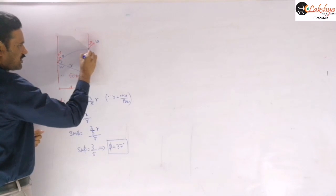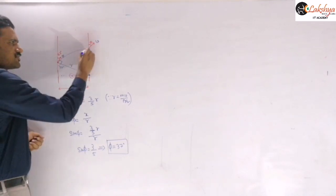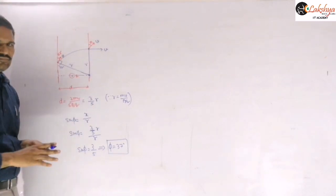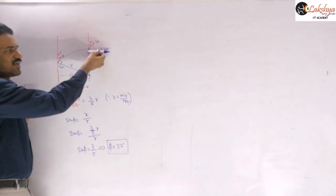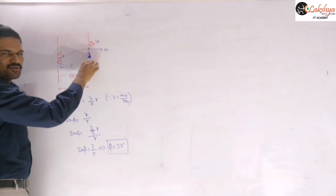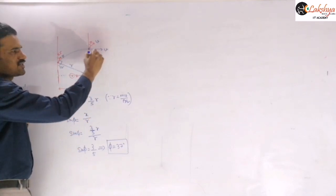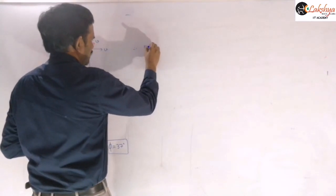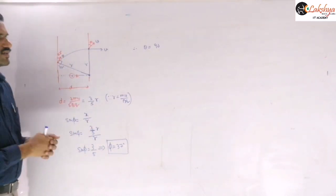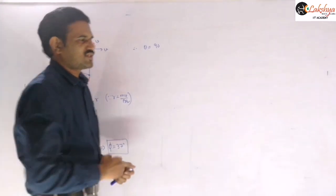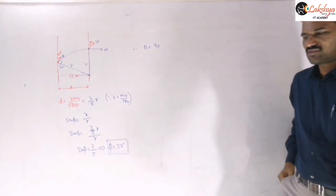Since the center lies on the boundary, the particle follows a semicircular arc within the field and exits perpendicular to the boundary. Because the tangential velocity is always perpendicular to the radius, and the center is on the boundary, the exit velocity is directed along the boundary. Therefore θ = 90°.